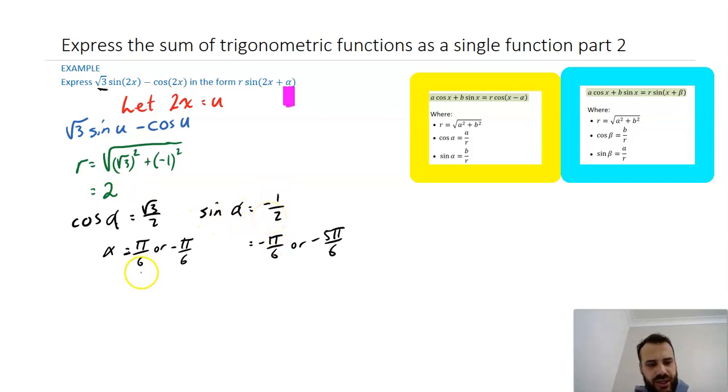Now, we're going to get two values when we solve here. Now, it's positive here, so that's going to be in quadrant 1 or quadrant 4, and this one's negative, so it's going to be in quadrant 4 or quadrant 3. Now, the one that they both have in common is quadrant 4, so quadrant 4 is going to be my answer, negative pi on 6.